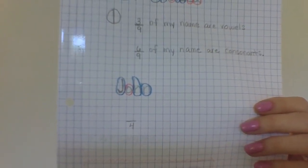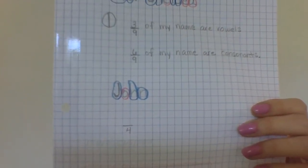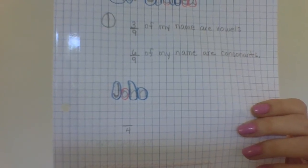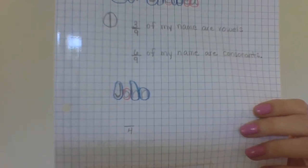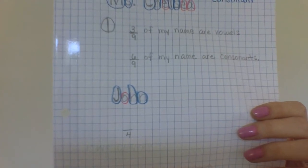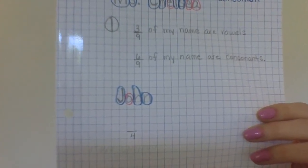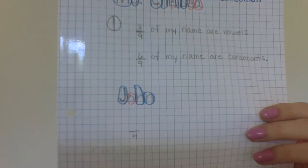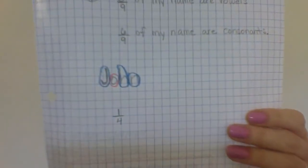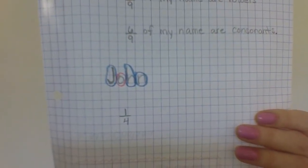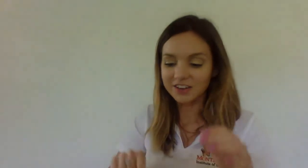Now how many vowels are in this name? There's one. So what will the numerator be for vowels in this name? One. Now I can say that one-fourth of John's name are vowels.